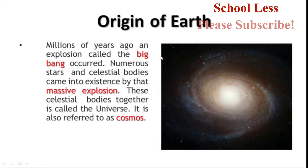Where is Earth? Millions of years ago, an explosion called the Big Bang occurred. Numerous stars and celestial bodies came into existence by that massive explosion. These celestial bodies together are called the universe. It is also referred to as cosmos. For the Big Bang explosion, there are little celestial bodies.